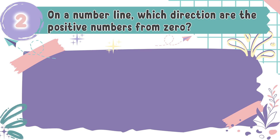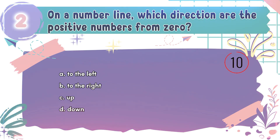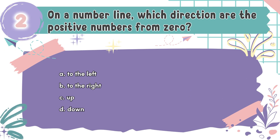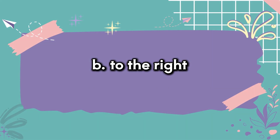Question number 2: On a number line, which direction are the positive numbers from 0? The choices are A. To the left, B. To the right, C. Up, D. Down. The correct answer is B. To the right. Positive numbers are always located to the right of 0 on a standard horizontal number line.